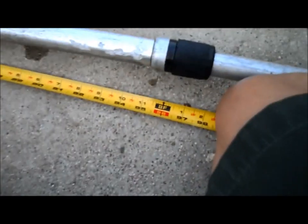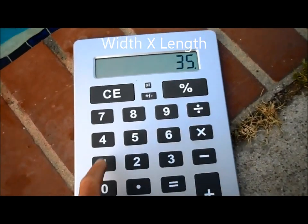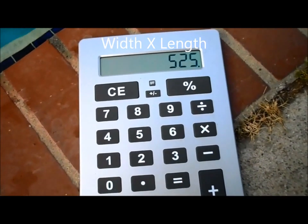Okay, so I measured the pool and it's 8 feet deep on the deep end. So what we're going to do now, we're going to take 35 feet long by 15 feet wide, times that together.